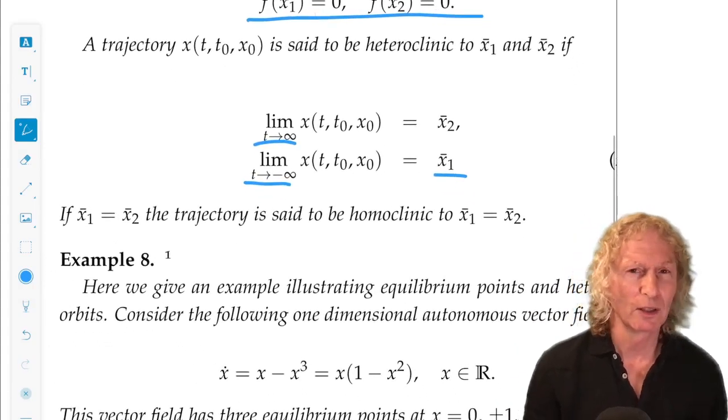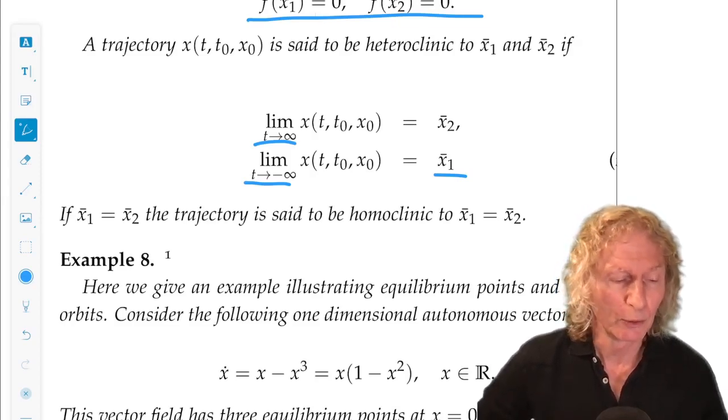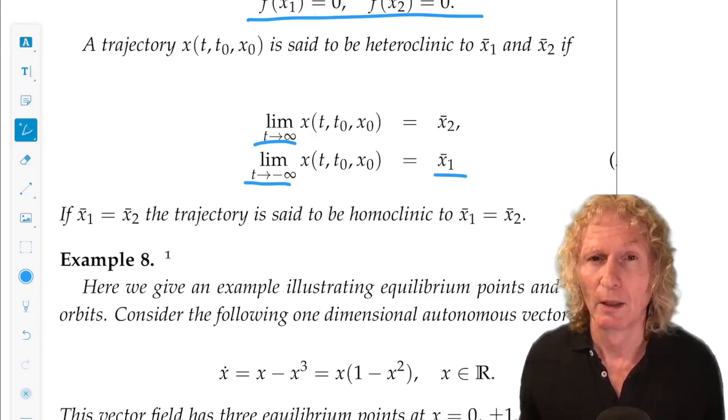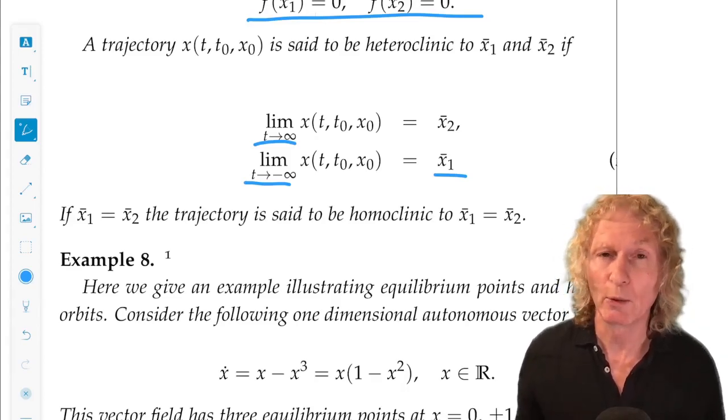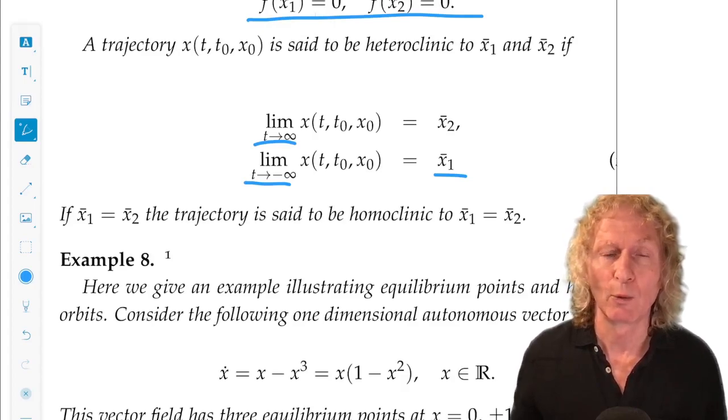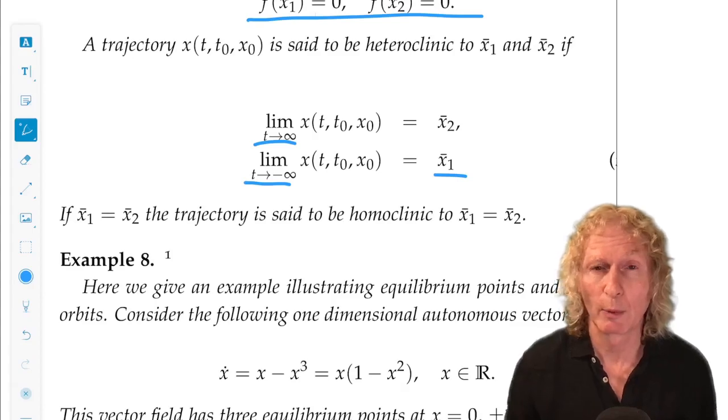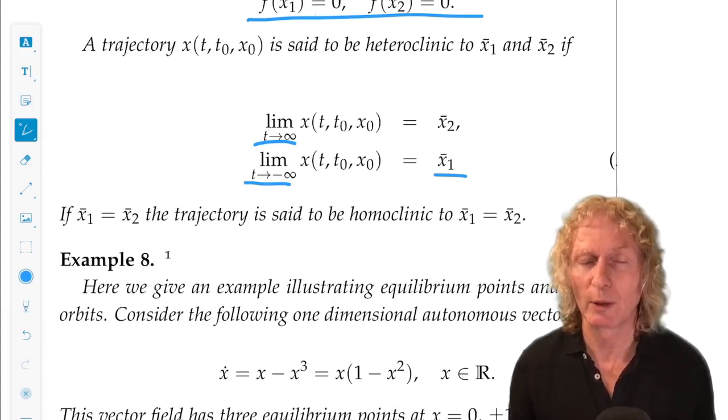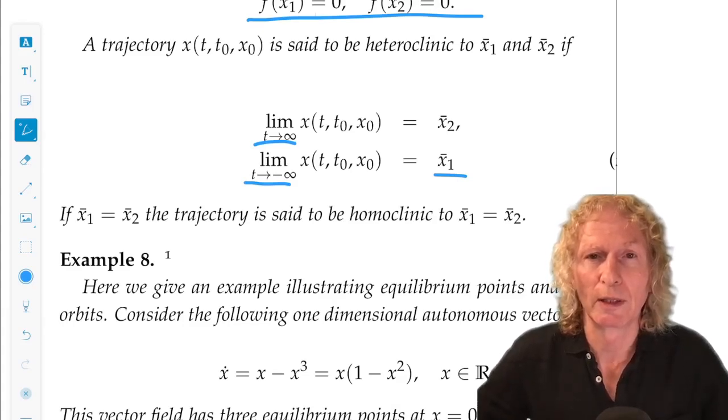Now we could generalize this in a lot of different ways. Okay, we could suppose we had two different periodic orbits. We could talk about orbits heteroclinic to periodic orbits or homoclinic to periodic orbits. We could have one equilibrium point and one periodic orbit, and we could talk about a trajectory that in one direction of time approached the periodic orbit and in the other direction of time it approached the equilibrium point. A big subject, homoclinic and heteroclinic solutions.